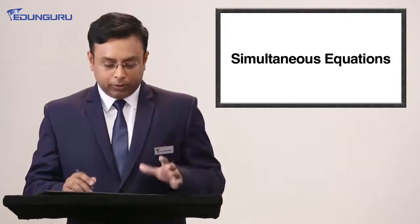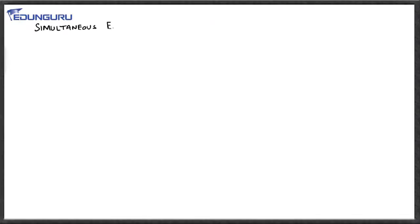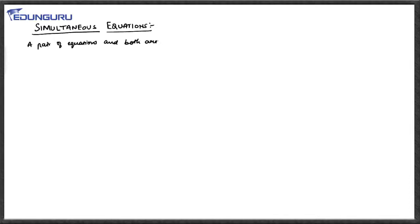So what does 'together' mean in mathematics? A simultaneous equation, or a pair of equations, means when there are two equations and both of them are satisfied together. For example, let me write an equation.